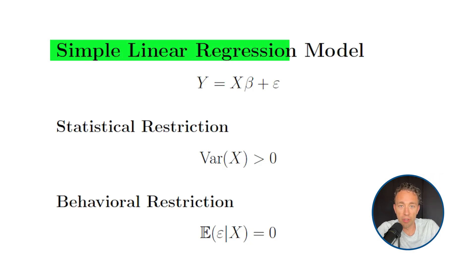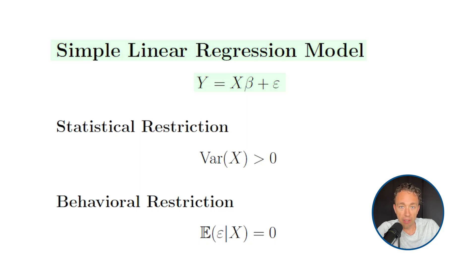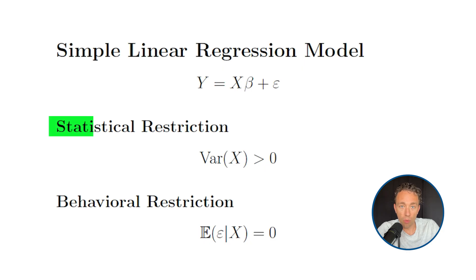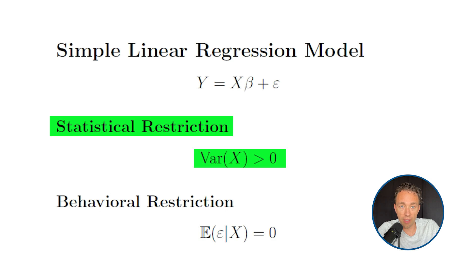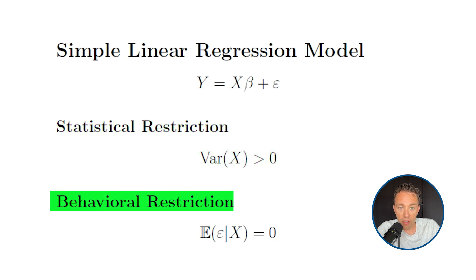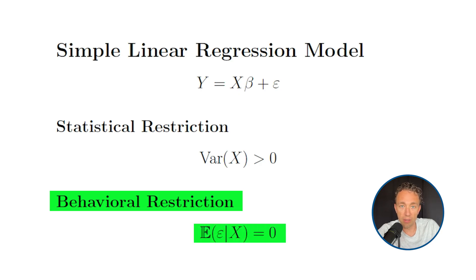It's also important to understand that identification always requires a model. Let's consider the simple linear regression model: y equals x beta plus epsilon. What do we need for beta to be identified? There are two types of assumptions we need to make. One is a statistical assumption — we need to have some variation in x in order to identify beta. The other is a behavioral assumption, which has to do with whether we can interpret beta as a causal parameter. To do that, we need to assume that the expected value of epsilon conditional on x is equal to zero.